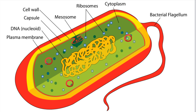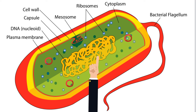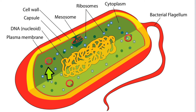You will find genetic material inside bacteria cells. You will find most of it in a nucleoid, which is a single strand of DNA that is folded. You will also find circular strands of DNA called plasmids.